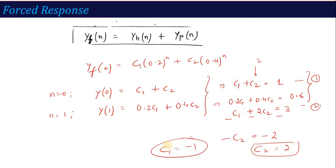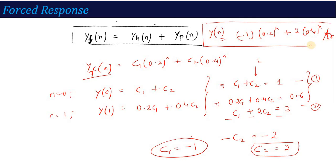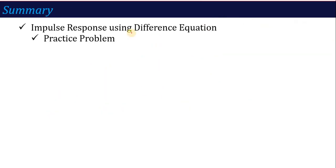So the solution to the given question — the impulse response — is Y(N) = H(N) = C₁·(0.2)^N + C₂·(0.4)^N, which is the calculated impulse response of the given difference equation. I hope that you can now relate this back to the concepts covered in the previous two lectures and easily work through such problems.